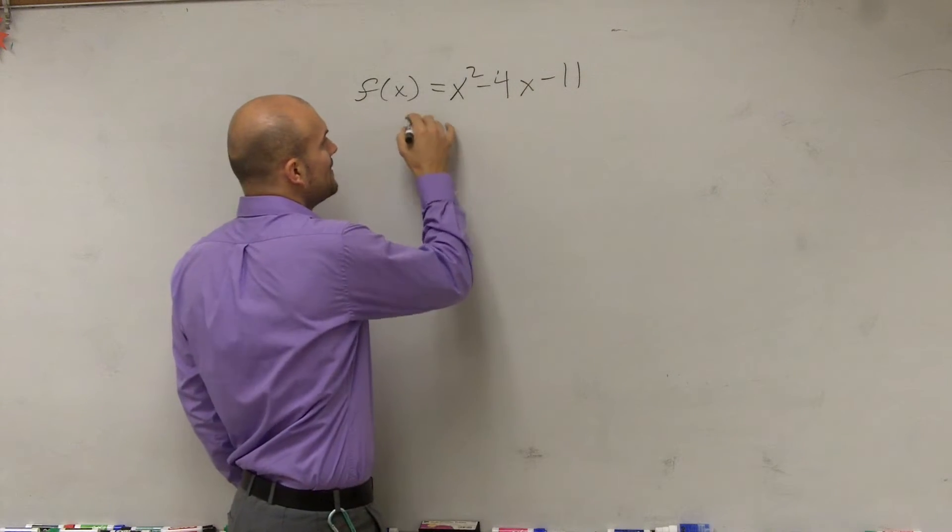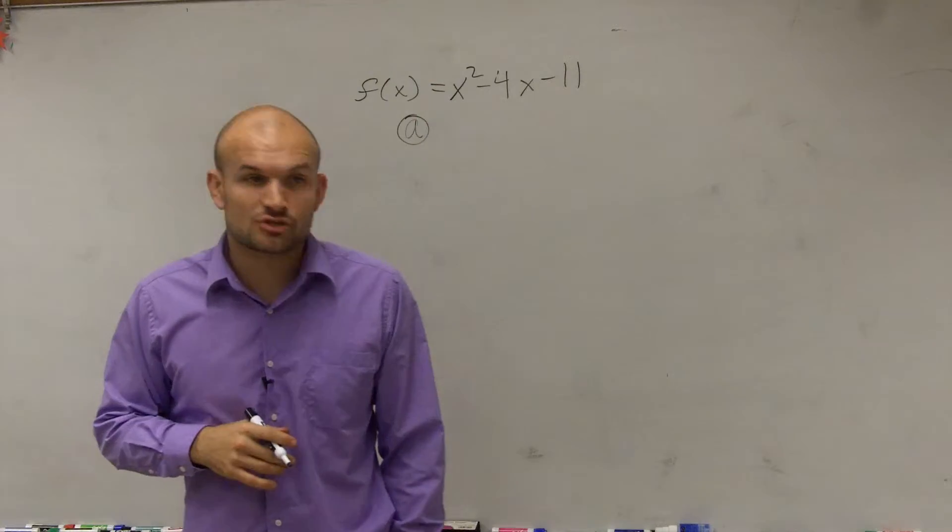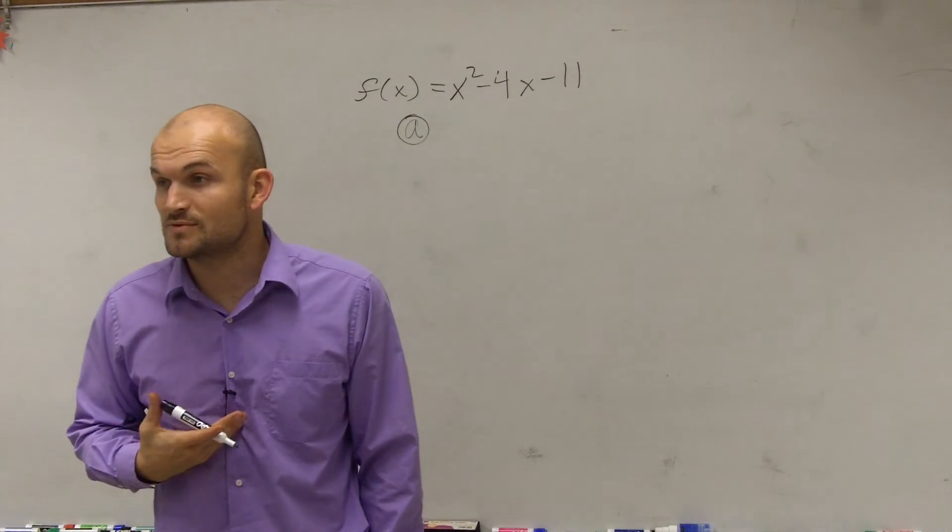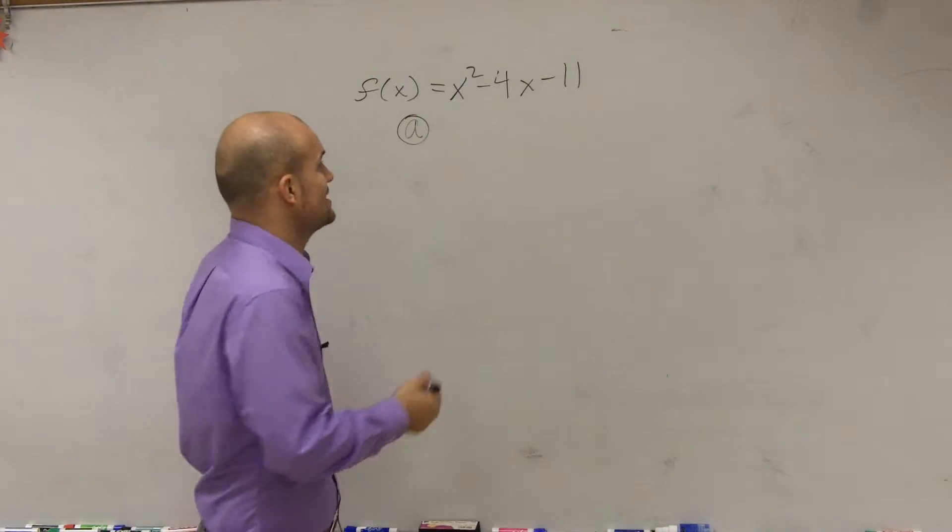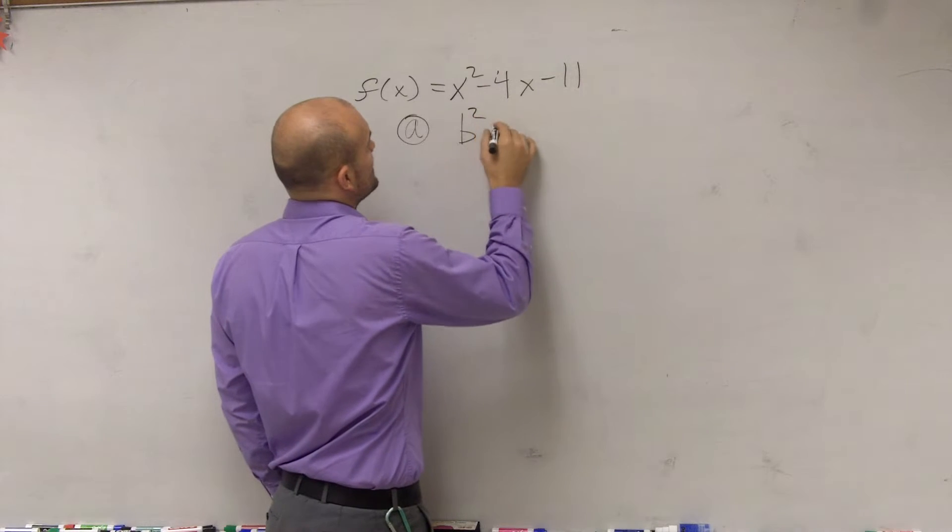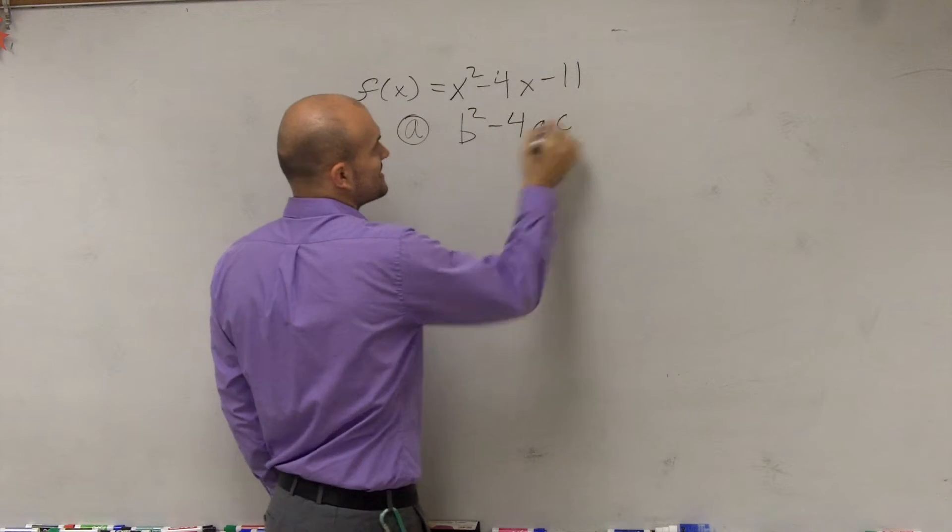A, B, and C. So for A, what I asked you to do is determine the discriminant. A couple students even asked me what the discriminant was. That was in your notes. You guys need to remember, discriminant is B squared minus 4 times A times C.